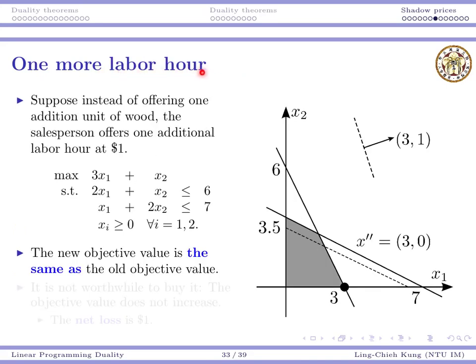But if the thing changes and the salesman is offering me one additional unit of labor hour at $1, the problem would become something different. And now what's changing is this constraint. It will move upward and the feasible region will also increase a little bit. But in this case, the optimal solution is not changed. The optimal solution is still here, still 3. So that means the new objective value is the same as the old objective value. And it is not worthwhile to buy this one additional unit of labor hour. In this case, the net loss is $1. We spend $1 to get this and earn nothing more.